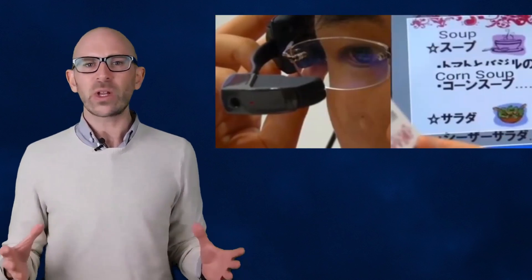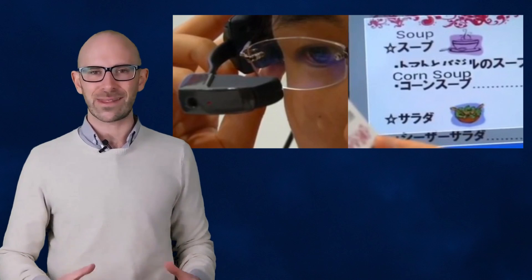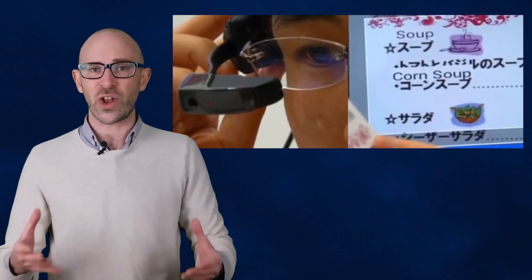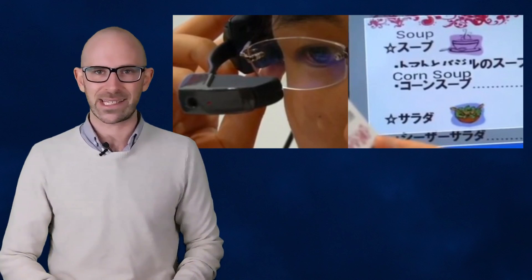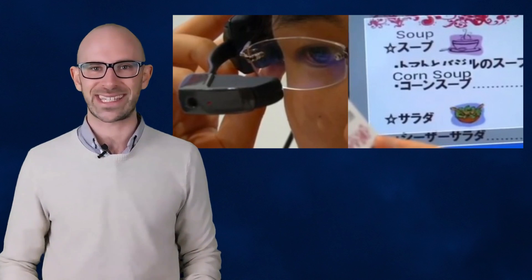According to the carrier, the glasses employ character recognition technology and are primarily aimed at users who travel abroad. Upon looking at a foreign language text, the glasses display a translation overlay to help translate the text to the language of your choice. Number 9.